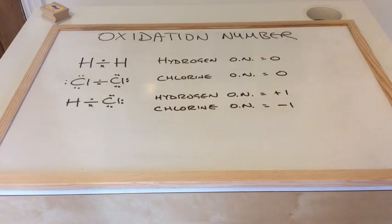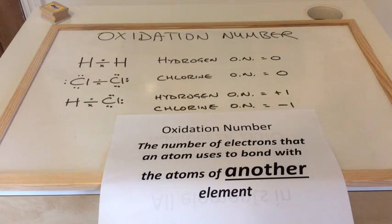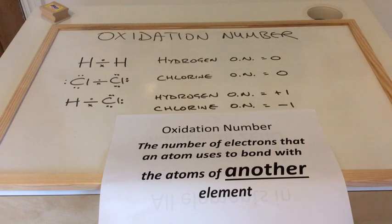So why the difference? The best place to start is with the definition. Oxidation number is the number of electrons that an atom uses to bond with the atoms of another element. In the first two cases you've only got one element present — two H's or two Cl's — so they're not bonding to another type of element, and so their oxidation number is zero.